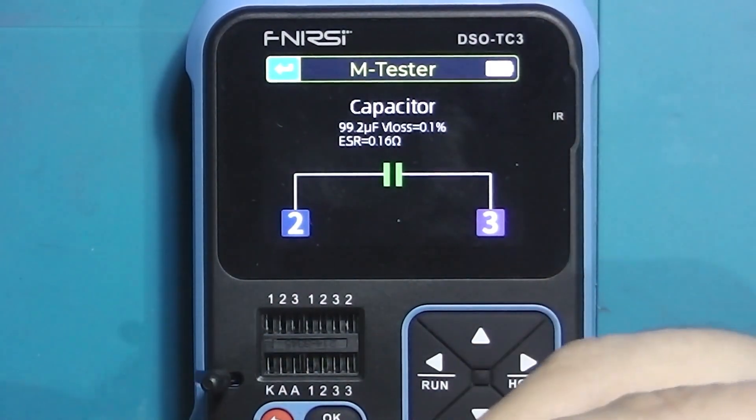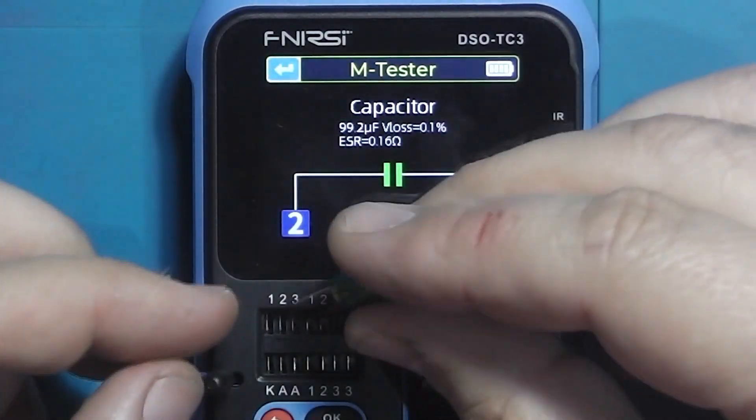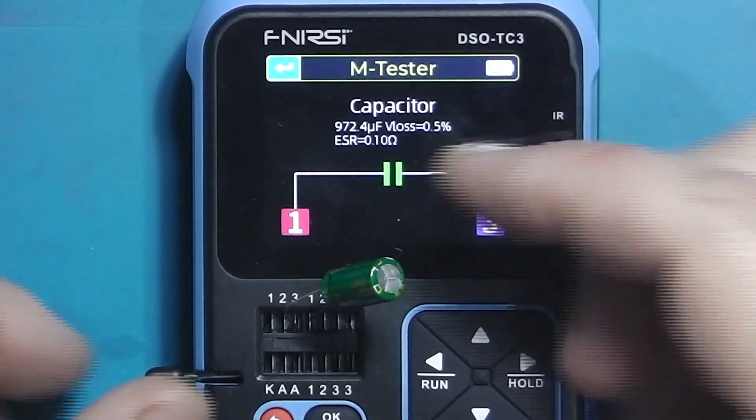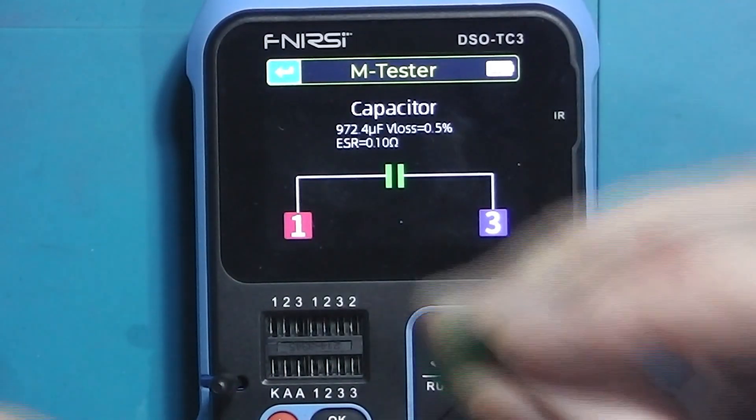The small 1000 microfarad 16 volt capacitors are almost identical, and most importantly, all have the same low ESR of 0.1 ohm.